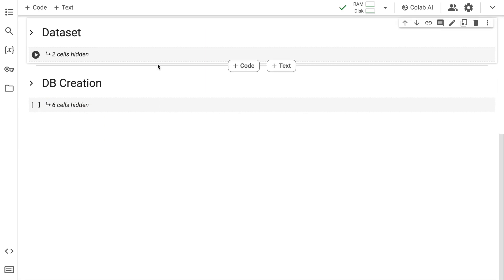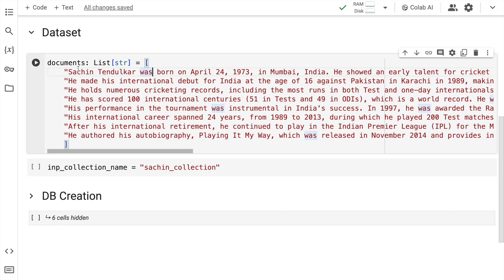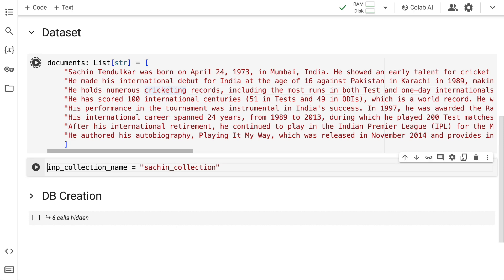Now I'll take you through the dataset as well. Now here I have a list of strings and each string basically consists of a story regarding Sachin Tendulkar. So it's basically a list of multiple sentences which will be saved into a vector database. So I'll quickly run this cell to firstly create the dataset. The next thing that I'll do is I'll create a variable called as input_collection_name which will be Sachin_collection. Think of this as a table name in your MySQL database. So if I have to refer a particular collection in a vector database, think of that as a table that I want to refer.